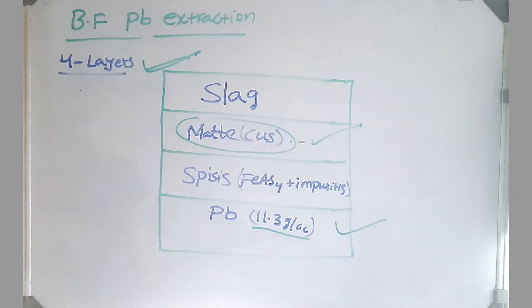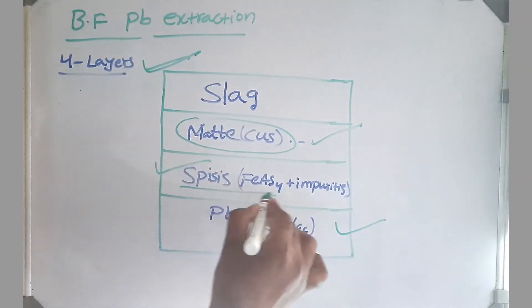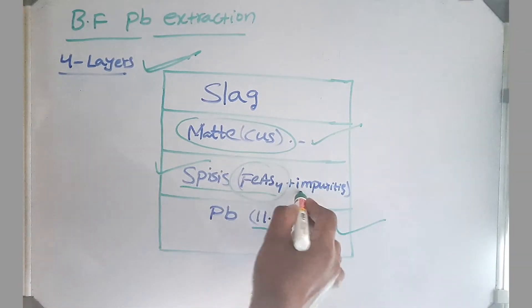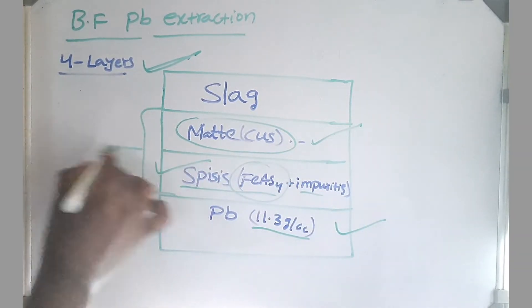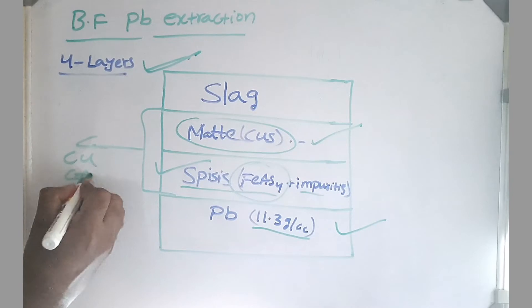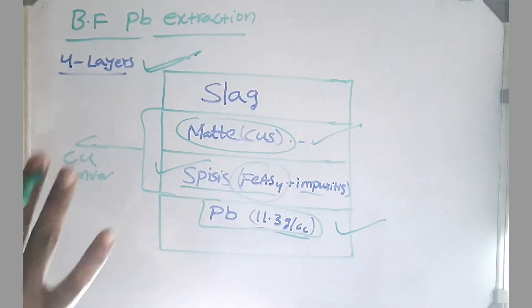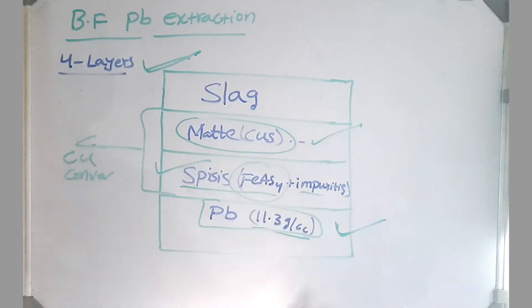This mainly consists of impurities like FeAs and other impurities. So these two are sent to copper converter and out of all these four layers, lead settles at the bottom layer. So the name came for lead as base bullion because it is at the base of all the products.